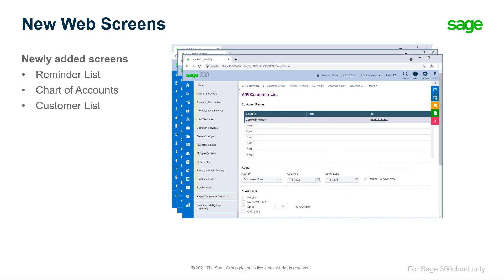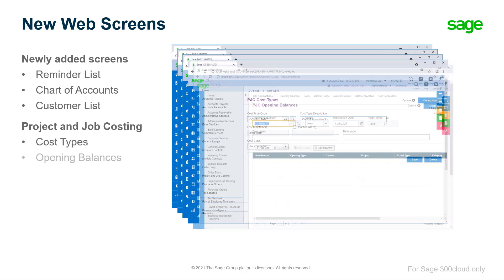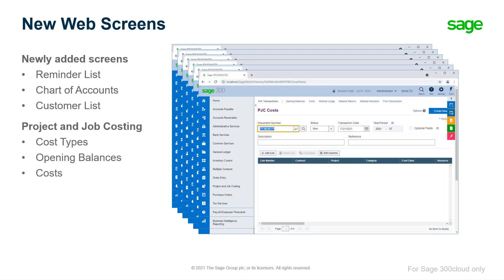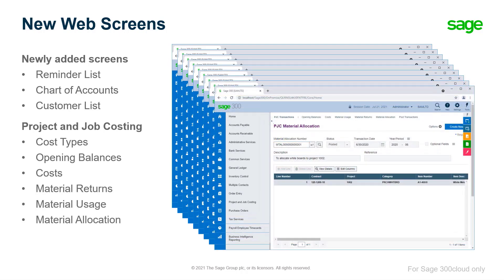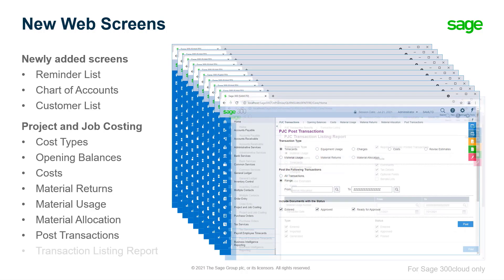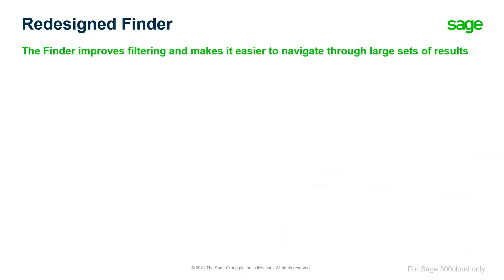A new customer list web screen for accounts receivable, which you can use to extract customer information from your database. We have also added multiple project and job costing web screens, including cost types, opening balances, costs, material returns, material usage, material allocation, post transactions, and transaction listing report.